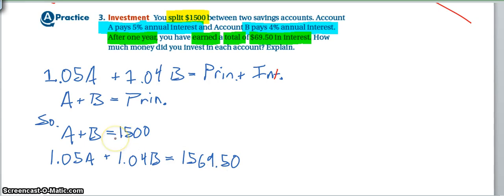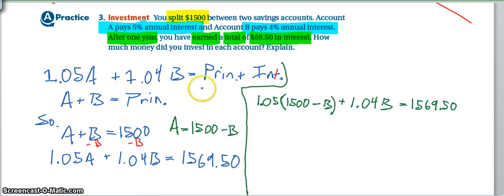So go ahead and isolate either your variable A or B, and then plug it in to this problem down here to solve for one of the variables. Pause the video and give this a shot. All right, I think this might get messy for a minute, but hang on to your seats. So we subtract B from both sides, and we find out that A is equal to 1,500 minus B. I substitute that in for A over here, and I do the multiplication, finding out that 1.05 times 1,500 is actually 1,575. And that then will be minus 1.05B. But then that gets added by 1.04B. And that's still all equal to my 1,569.5.